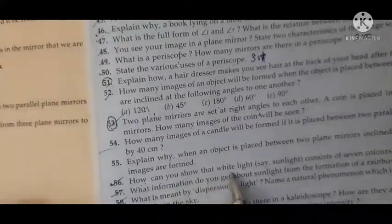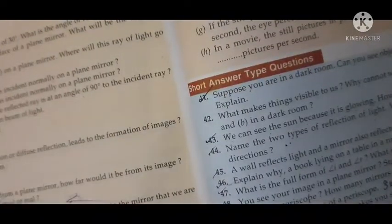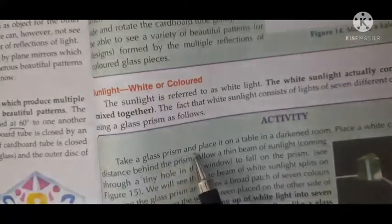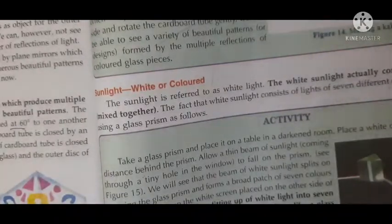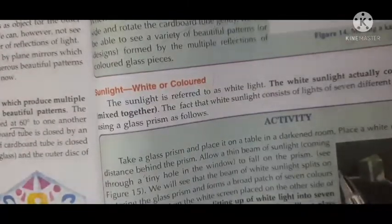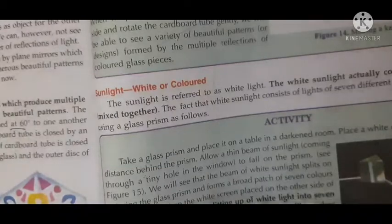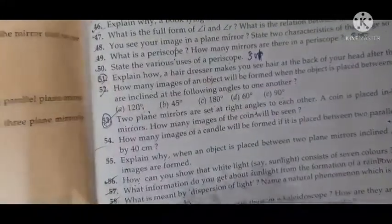Question number 56: How can you show that white light consists of seven colors? Open page number 303. You have to write an experiment: take a glass prism and place it on the table of a darkened room, place a white cardboard screen on the other side of the prism. Write this answer in your own words up to the point where seven colors — called the spectrum — appear on the white screen.